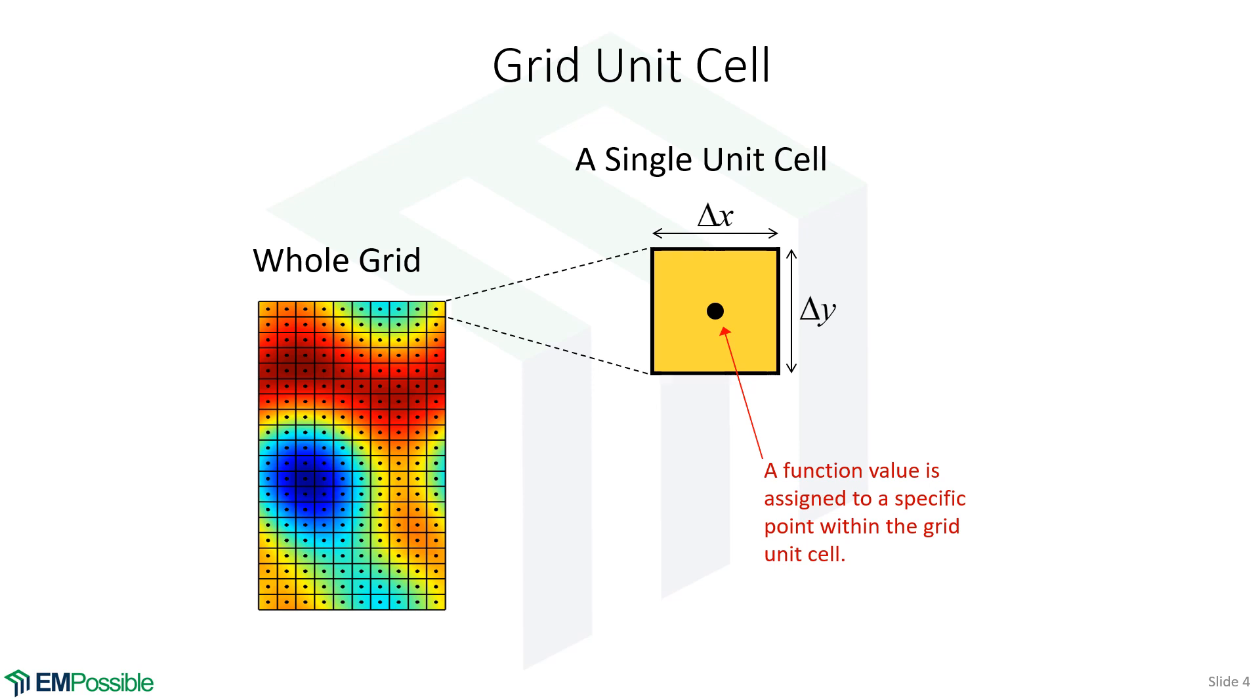But even still, remember, we are only actually storing our function values at an infinitely small point. If I drew an infinitely small point, we wouldn't see it. So I made it a little bit big and fat there. But we only store function values at an infinitely small point within a cell. We're not making an approximation that the function value is constant throughout the cell. More realistically, we'll be assuming that it varies linearly through the cell.